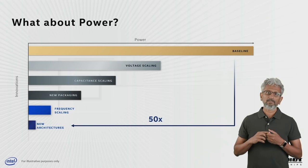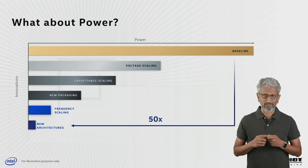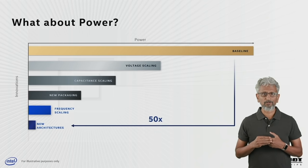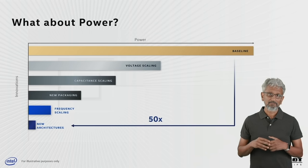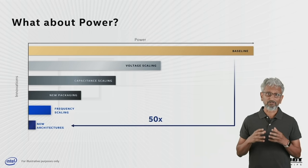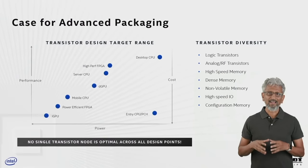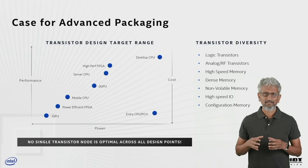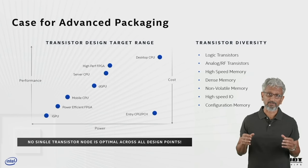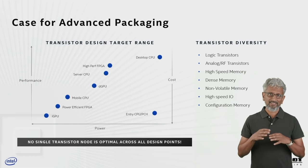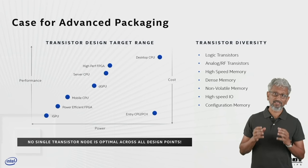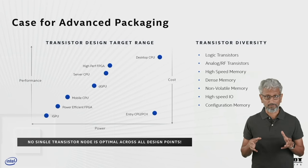No single transistor is optimal across the whole design range. There is definitely opportunity for power and performance optimization if we can target different transistor design points for different IPs on a chip. But we need the ability to put these back together. Our advanced packaging folks at Intel have been iterating for decades on finer bump pitches and higher density, pursuing technologies that can scale to high-volume manufacturing — critical to continuing density scaling.